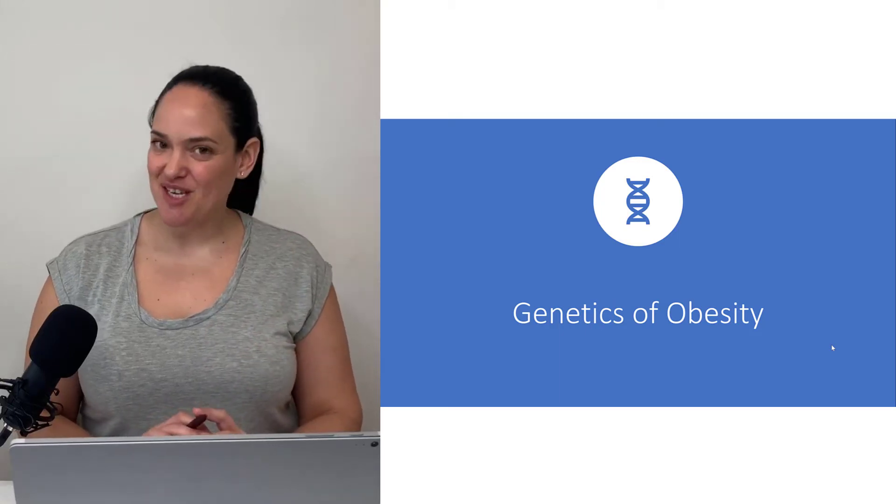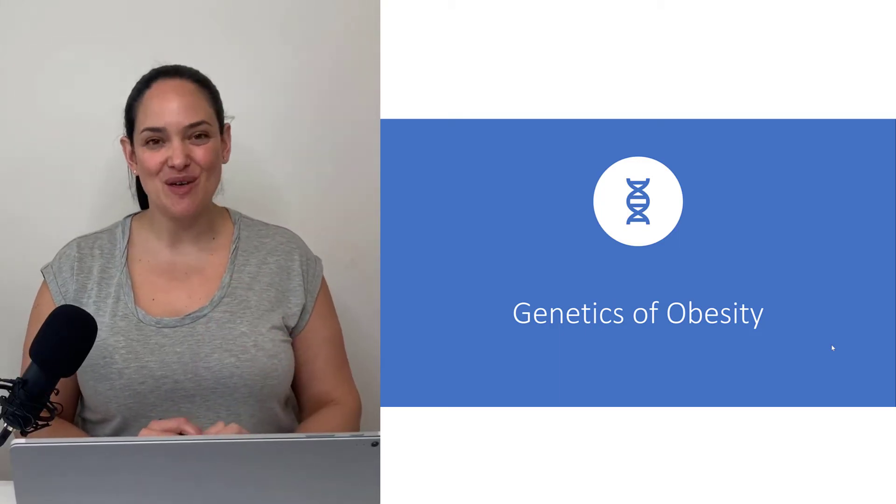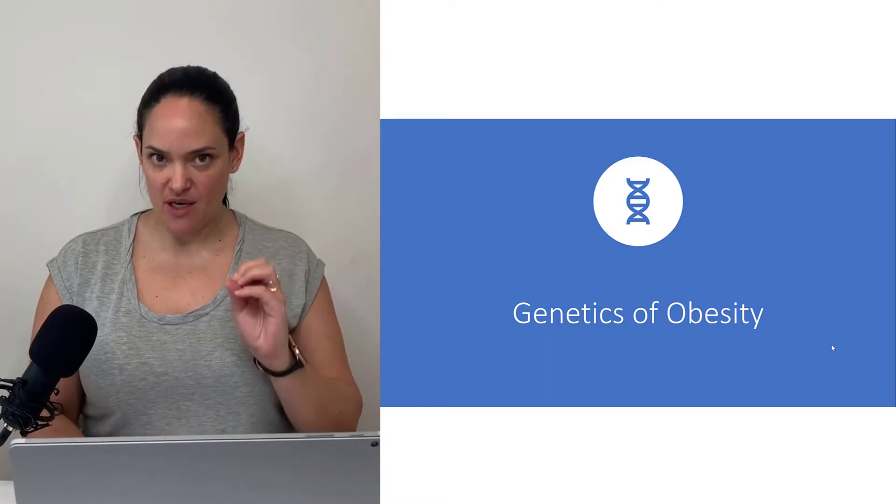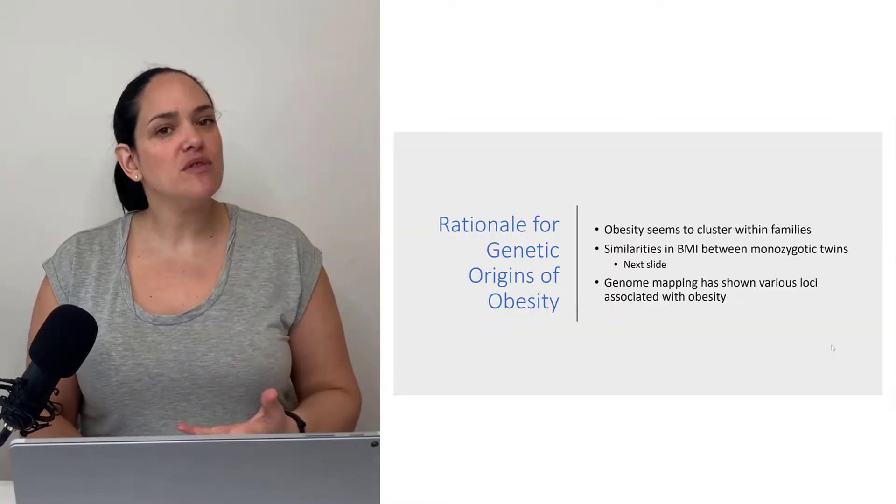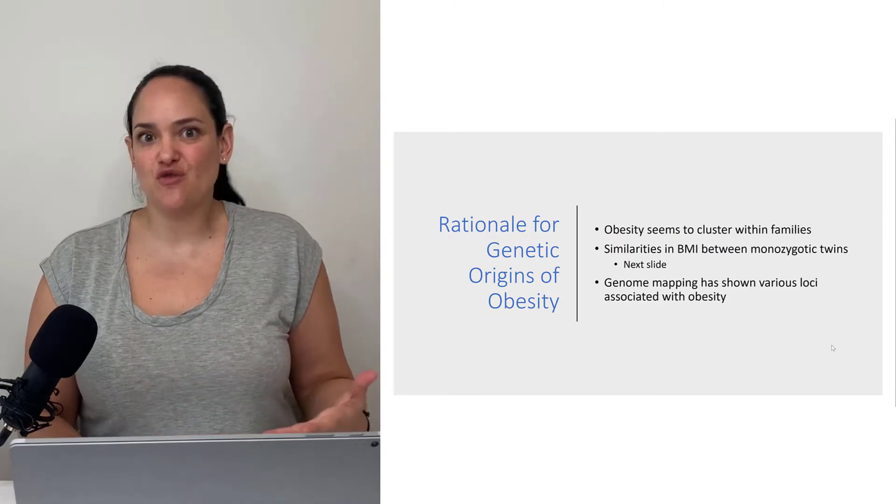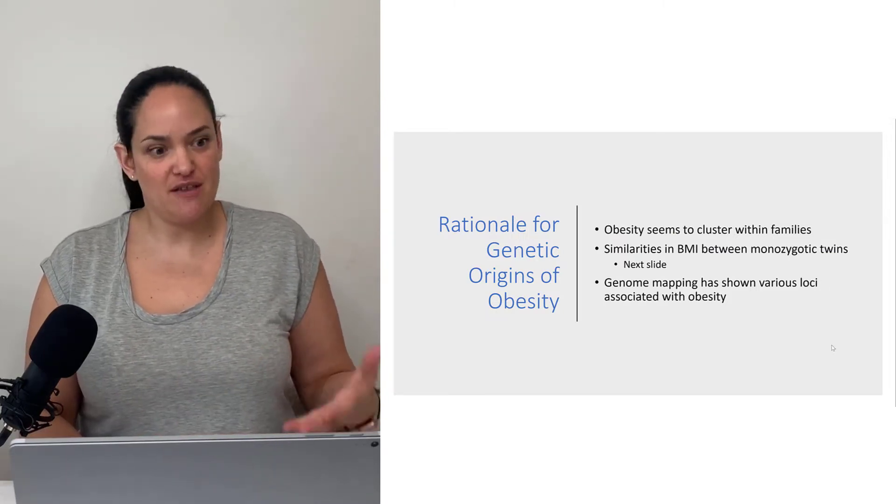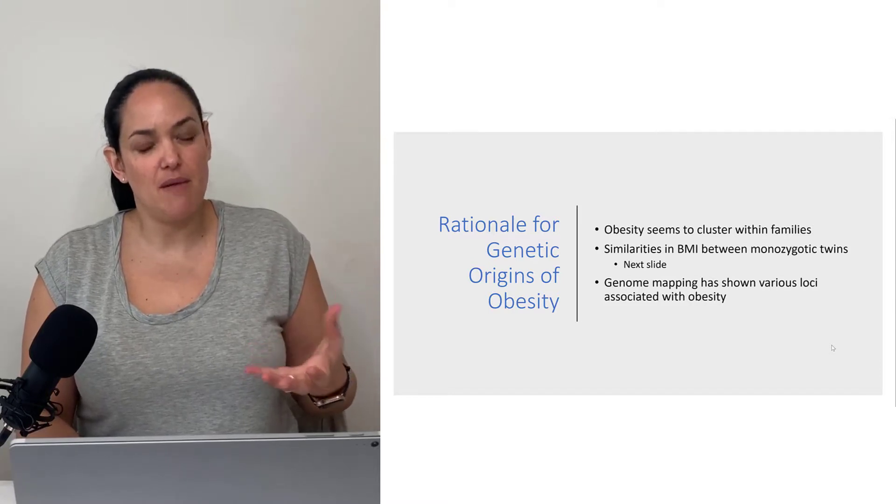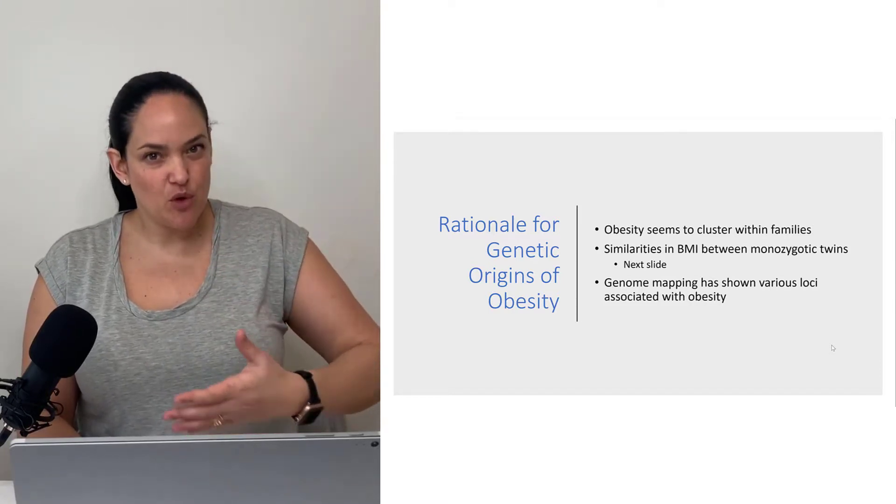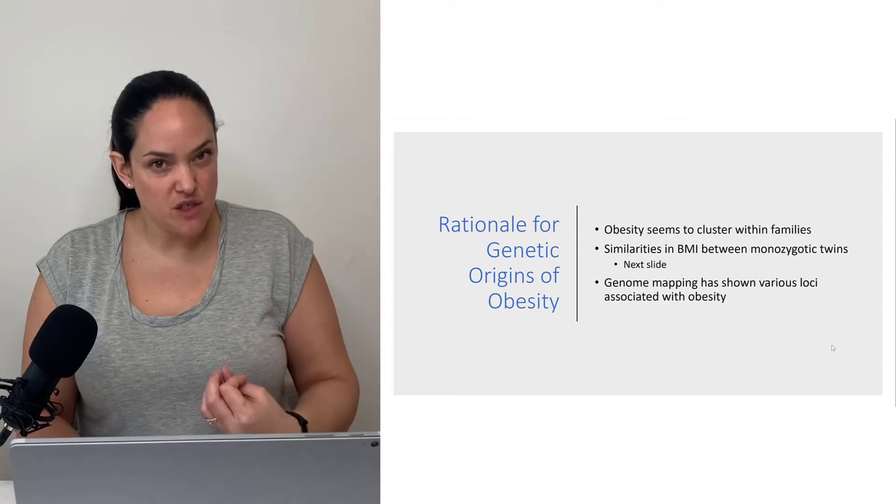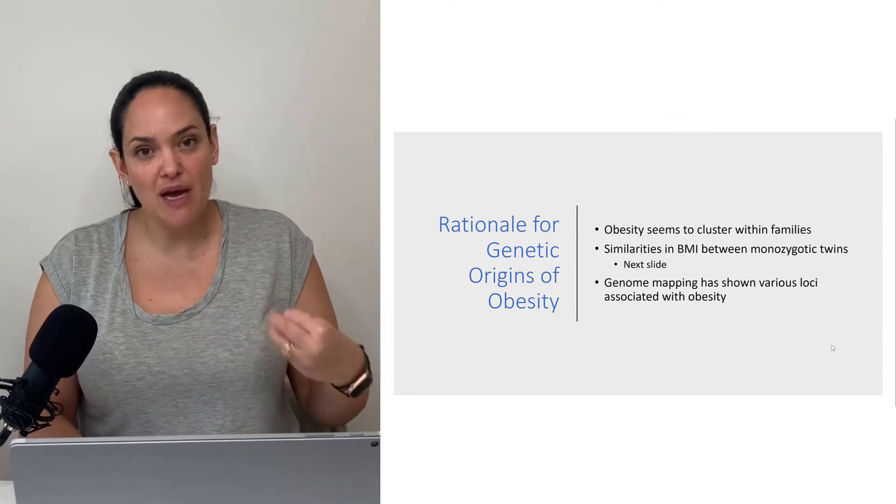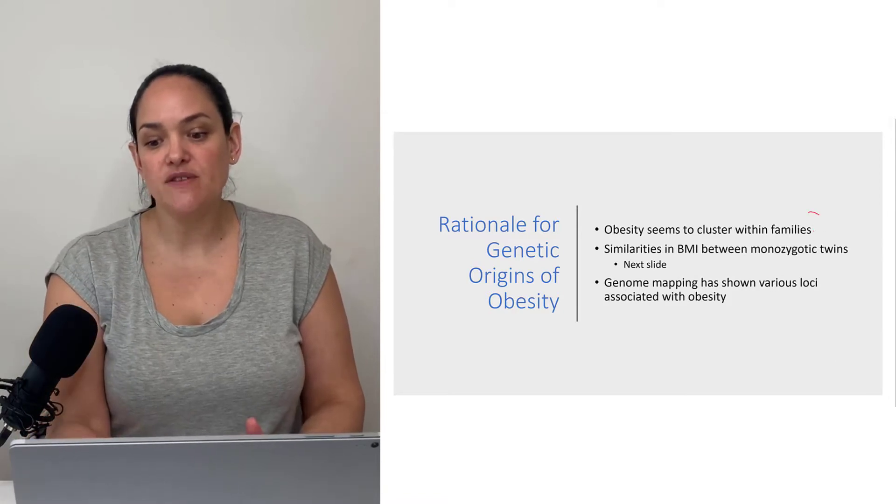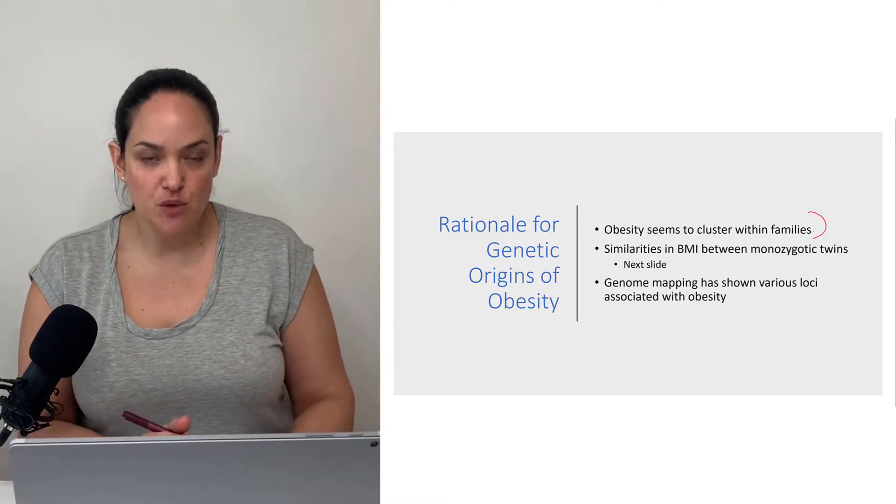A lot of people think of obesity as a lifestyle disease, and of course there's a lifestyle component to it, but there is also a very strong genetic component. We've known this for quite some time from observational data showing that brothers and sisters tend to have similar BMIs, and we tend to have similar body shapes and fat distribution patterns similar to our parents. Obesity does seem to cluster within families.